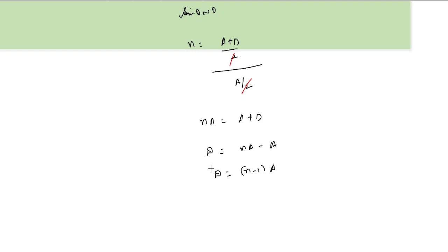...or the angle of minimum deviation is equal to (n minus 1) into A for a small angle prism. This term is useful to define dispersions or angular dispersions.